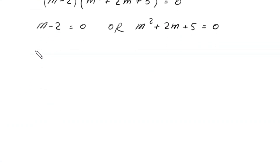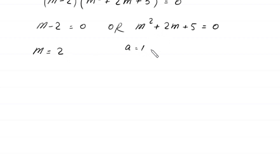From the first equation, we get the value m is equal to 2. From the quadratic equation m squared plus 2m plus 5 equals 0, we identify a is equal to 1, b is equal to 2, and c is equal to 5.